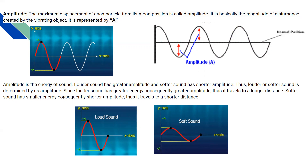Louder sound has more energy, so the vibrations are greater and travel a longer distance. For example, if we hit a drum very hard or use a loud speaker, the sound energy is very large and can be heard from far away. But if we speak in a very soft, low voice, the energy is less, the amplitude is shorter, meaning the sound will not travel very far.